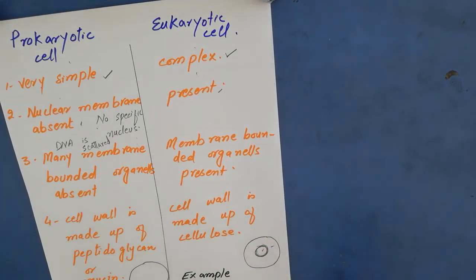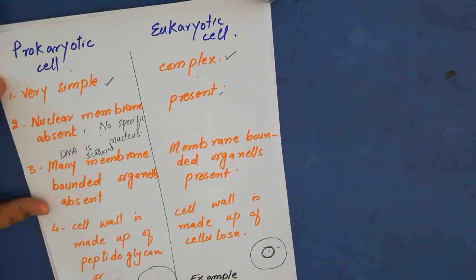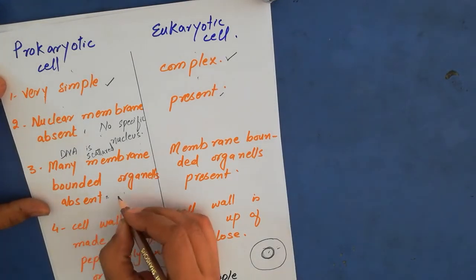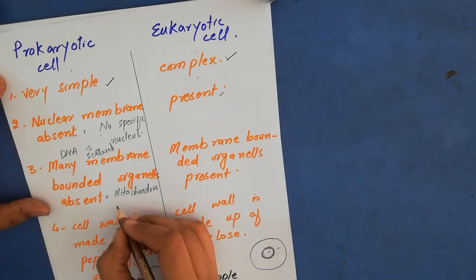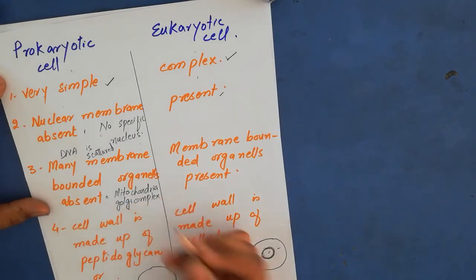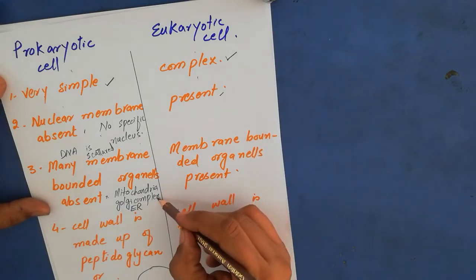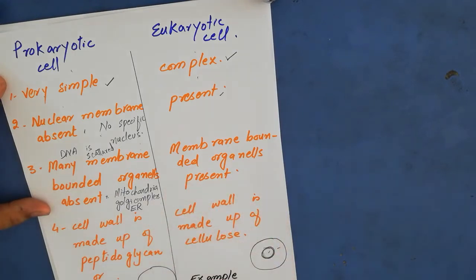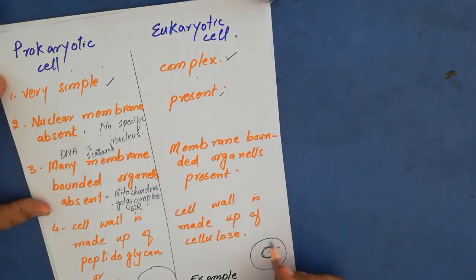Many membrane-bounded organelles are absent in prokaryotic cells. Examples of such organelles include mitochondria, Golgi complex, and endoplasmic reticulum, along with many other cytoplasmic organelles. These organelles are absent in prokaryotic cells but are present in eukaryotic cells.